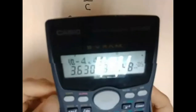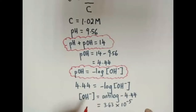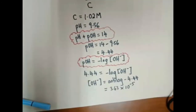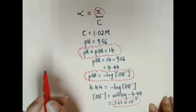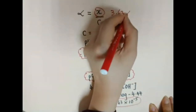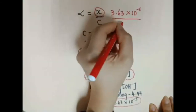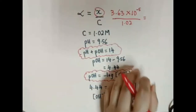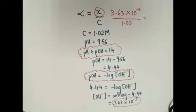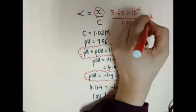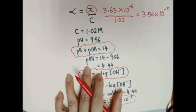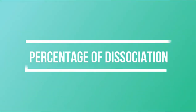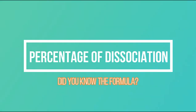We obtain the value 3.63 times 10 to the power of negative 5. Substituting the X value into the formula, the final answer for degree of dissociation is 3.56 times 10 to the power of negative 5. You can also convert this to a percentage.